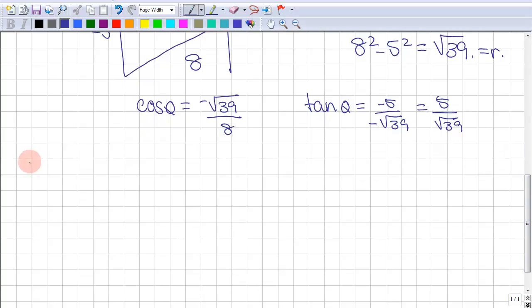We know that sine is negative 5 over 8. So cosecant theta will be 8 over negative 5 because cosecant, sec, and cot are all the reciprocal of the above.